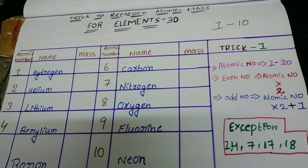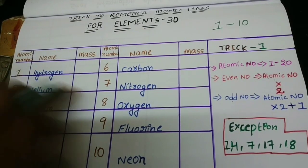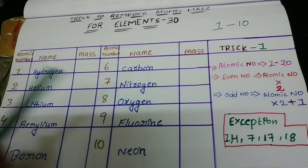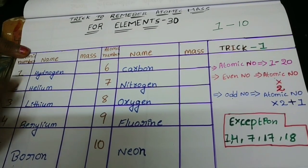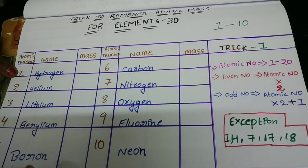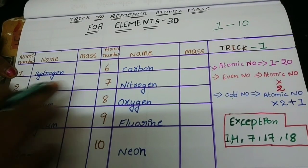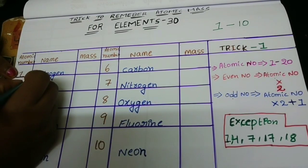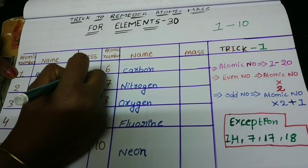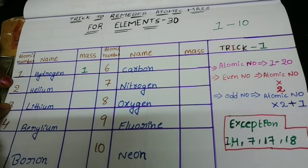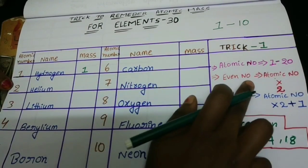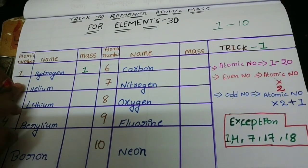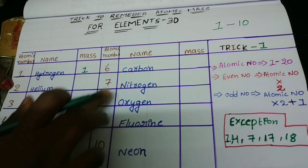Let's first write elements 1 to 10. Note that hydrogen is an exception — hydrogen's atomic number is 1 but its mass number is also 1. Now let's start with the even numbers. The even numbers from 1 to 10 are 2, 4, 6, 8, and 10.